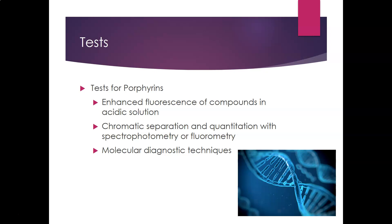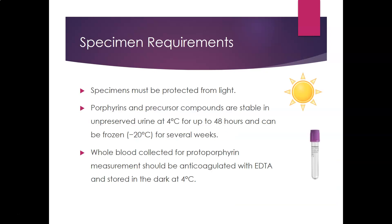Molecular diagnostic techniques can identify enzyme deficiencies since porphyria is often a genetic, inherited disease. Specimen handling is critical: specimens must be protected from light at all times. Porphyrins and precursor compounds are stable in unpreserved urine at 4°C for up to 48 hours, or frozen at -20°C for several weeks. Whole blood collected for protoporphyrin measurement should be anticoagulated with EDTA and stored in the dark at 4°C.